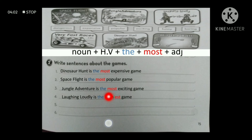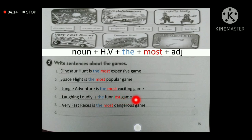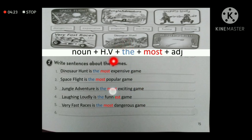'Very fast races' is connected to 'dangerous,' so the superlative sentence is: very fast races is the most dangerous game. 'Most dangerous' because 'dangerous' is a long adjective. We also have 'dinosaur hunt' which was covered in number one, so we move to the last one.